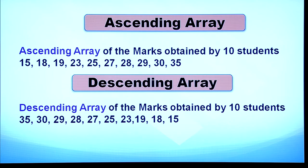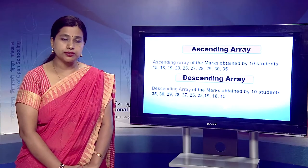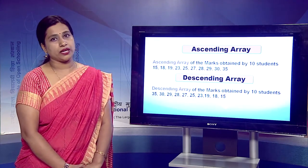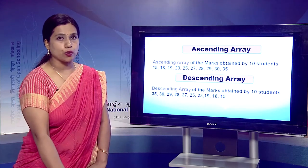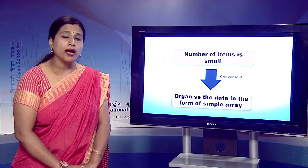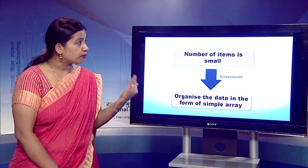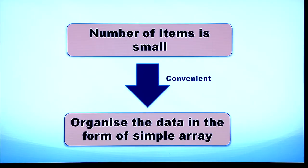In descending order we simply reverse the arrangement: 35, 30, 29, 28, 27, 25, 23, 19, 18, 15. We use simple array when the number of items is too small so that we can easily arrange them in ascending or descending order.